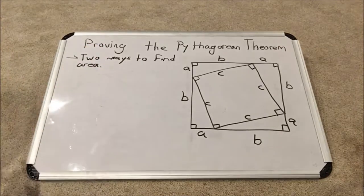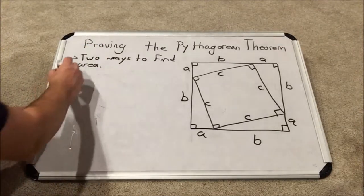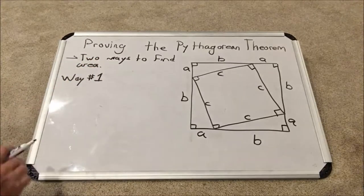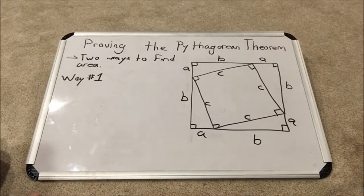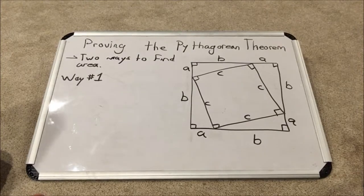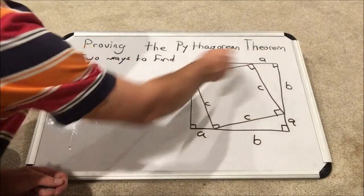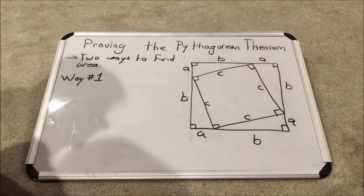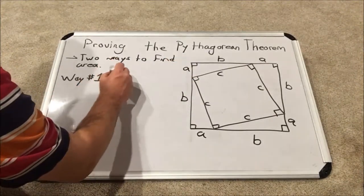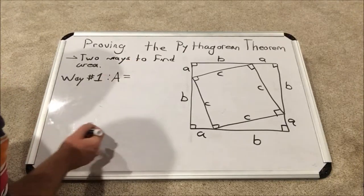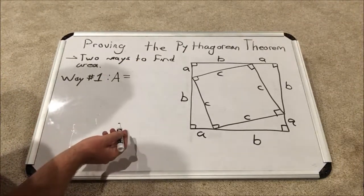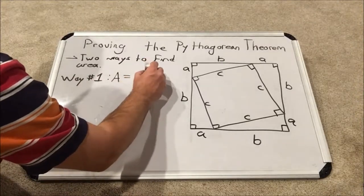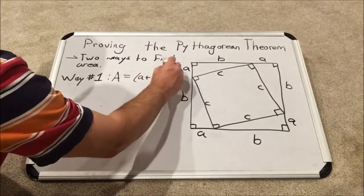Okay, way one is going to not use the inner square at all. It is going to just use the outer square. Okay, so the outer square sides are each A plus B. So the area of the square will be equal to its side squared, which is where that term comes from. To square something.